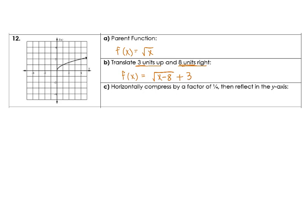Now notice the next one says horizontally compressed by a factor of 1 fourth – that one's kind of tricky because horizontally, this is going to happen on the inside of the function, so I'm going to make a square root – I know there's an x inside. Now horizontally compressed by a factor of 1 fourth – horizontally, that was the reciprocal – so really we started out with a 4 here. And then if we're reflected over the y-axis, we need to put a negative on the inside.